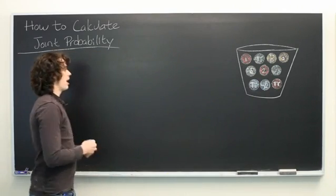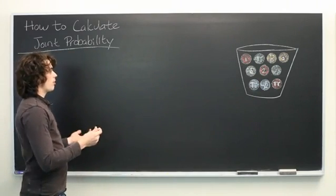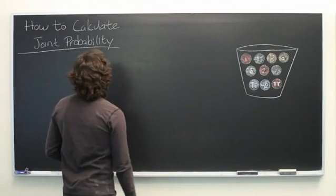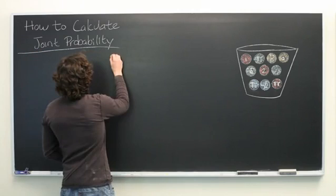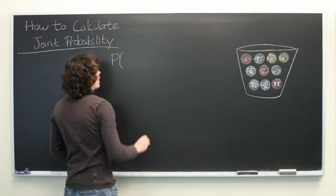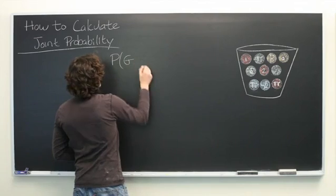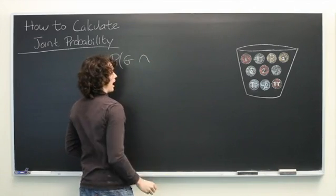And we want to be able to calculate the joint probability of certain events happening. So we'll start with a simple example. What is the probability that a randomly drawn ball will be green and rational?